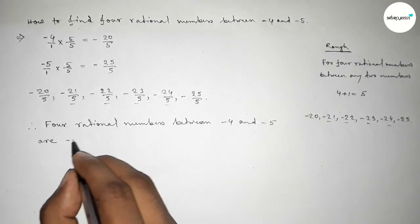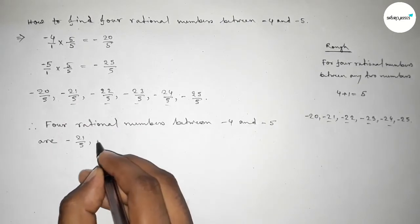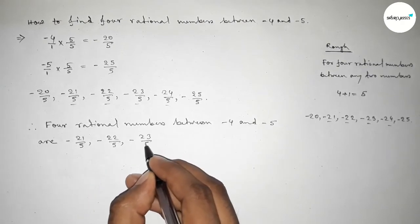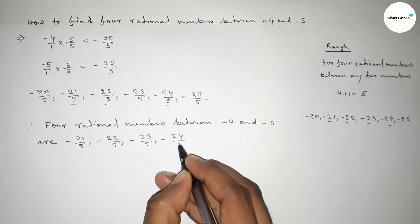So here the first one is minus twenty-one over five, minus twenty-two over five, minus twenty-three over five, and minus twenty-four over five.